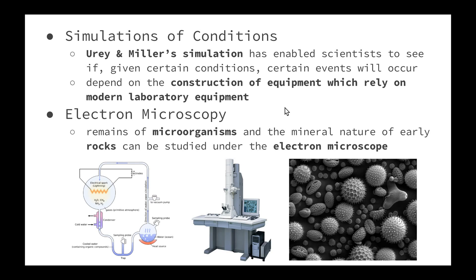Next we have simulations of conditions. The simulation of the conditions of early Earth, as Urey and Miller have done, has enabled scientists to see if, given certain conditions, certain events will occur. They are testing out the feasibility of a number of hypotheses. Simulations depend on the construction of equipment such as that of Urey and Miller, which we can find in the modern laboratory.